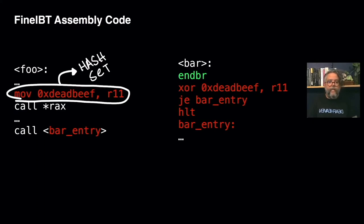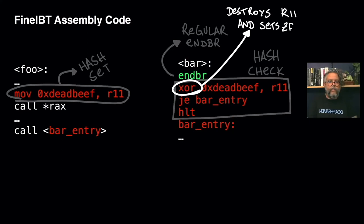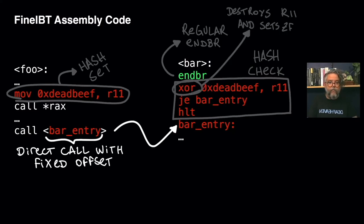First, this is the hash set operation — it places the hash respective to the function pointer used in the indirect call into the register R11. These are the regular end-branch and the hash check operation. Since the end-branch is in place, the control flow will go through the hash check, which XORs the contents of R11 with the expected hash. If the result of this operation is zero, then the following jump is taken; otherwise it is not taken and the execution reaches the HALT instruction. We use an XOR operation because it will consequently destroy the contents of R11, which can be important to prevent reuse attacks if you are mixing FineIBT-enabled code with non-FineIBT-enabled code. Finally, the direct call now targets the address right after the hash check snippet.